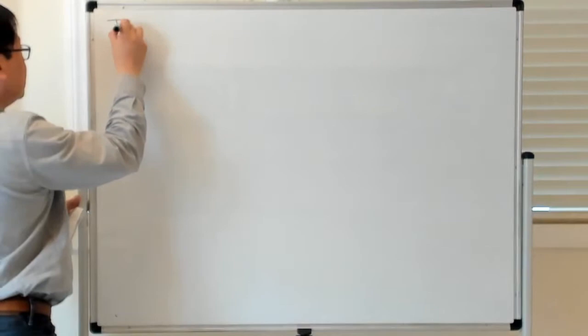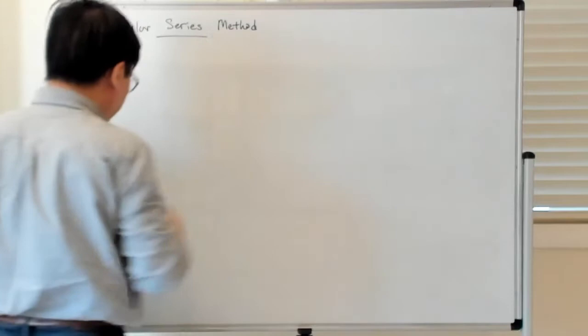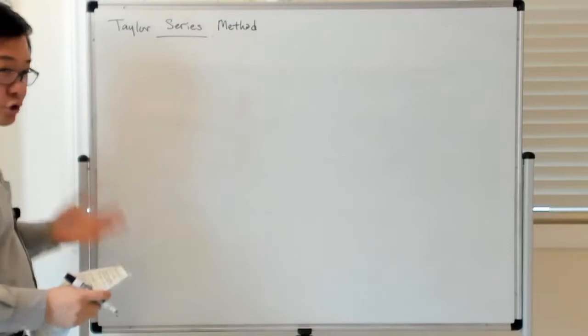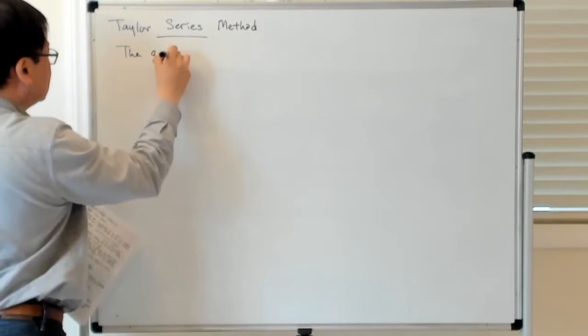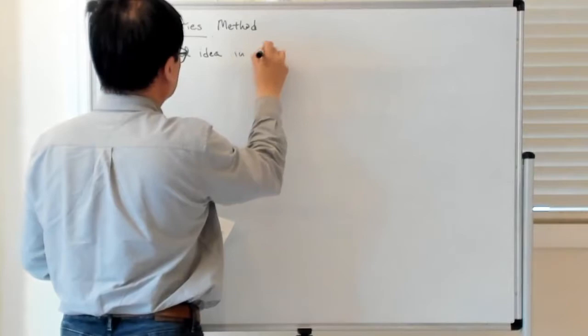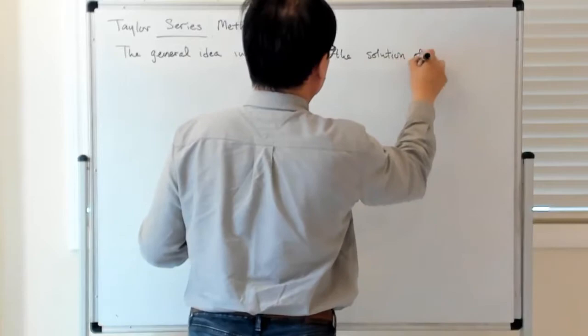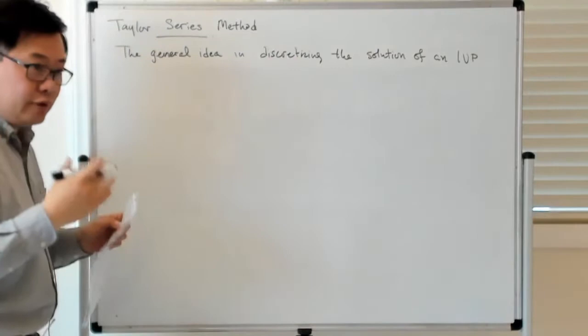Now we're going to introduce the notion of the Taylor series method for approximating the solutions of a differential equation. The whole point is to, in essence, weaponize the Taylor theorem in order to construct numerical approximations. The general idea in most approaches to discretizing the solution of the initial value problem is to replace some sort of approximate relationship which the exact solution satisfies.